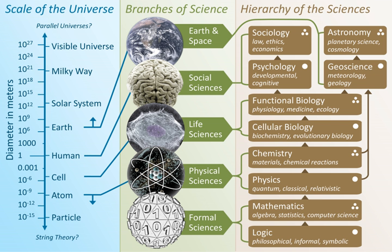The formal sciences are the branches of science that are concerned with formal systems, such as logic, mathematics, theoretical computer science, information theory, systems theory, decision theory, statistics, and theoretical linguistics. Unlike other sciences, the formal sciences are not concerned with the validity of theories based on observations in the real world, but rather with the properties of formal systems based on definitions and rules. Methods of the formal sciences are, however, essential to the construction and testing of scientific models dealing with observable reality, and major advances in formal sciences have often enabled major advances in the empirical sciences.